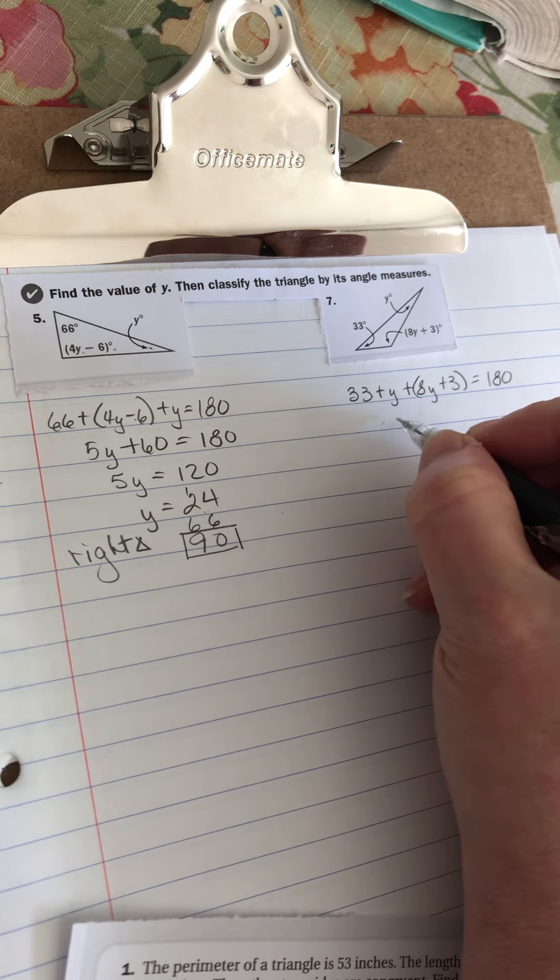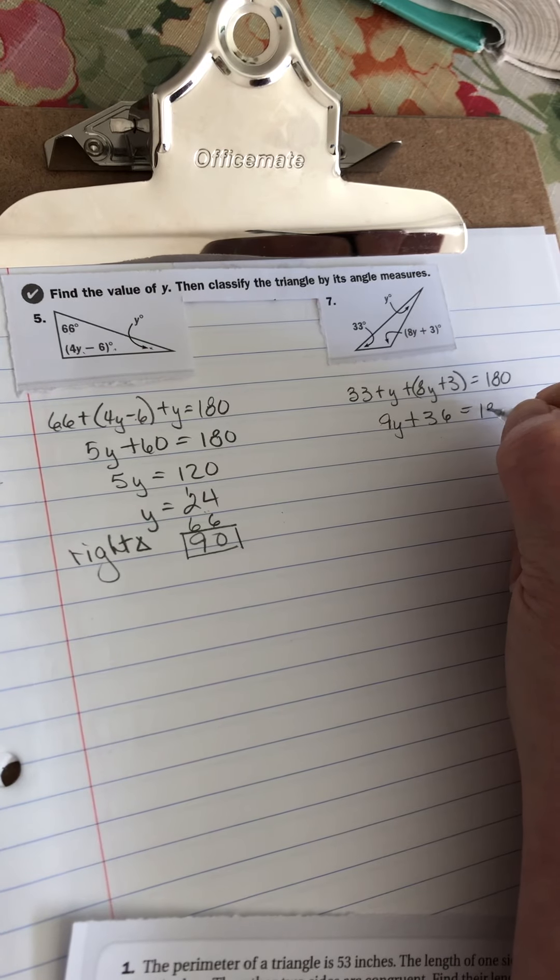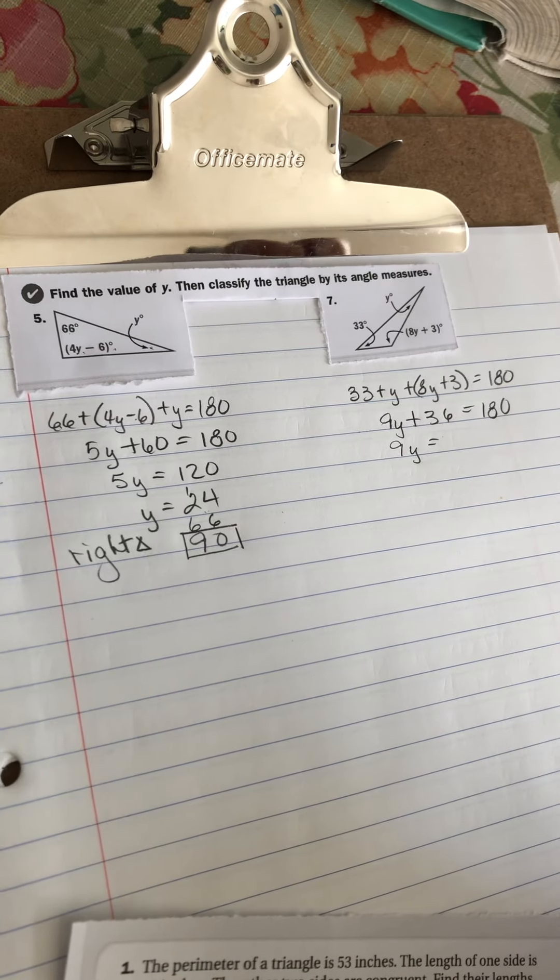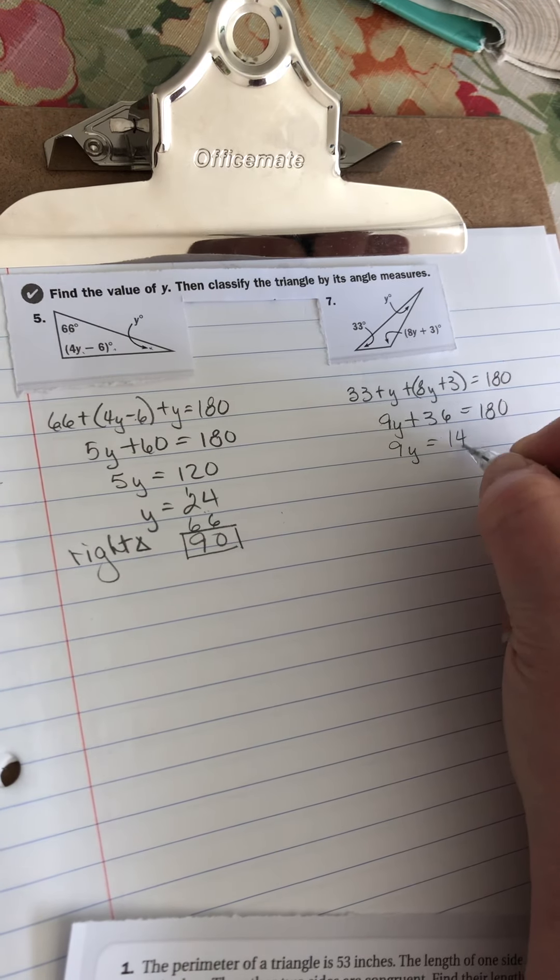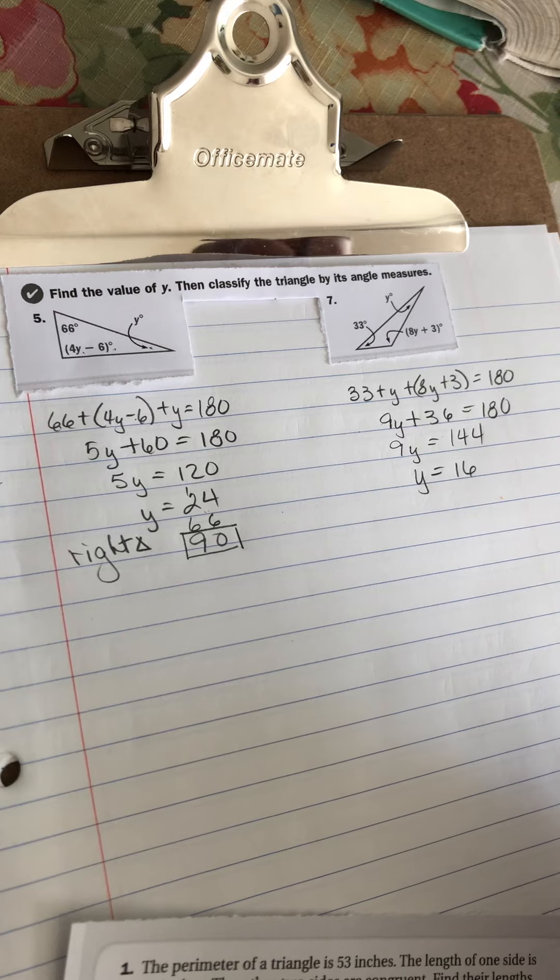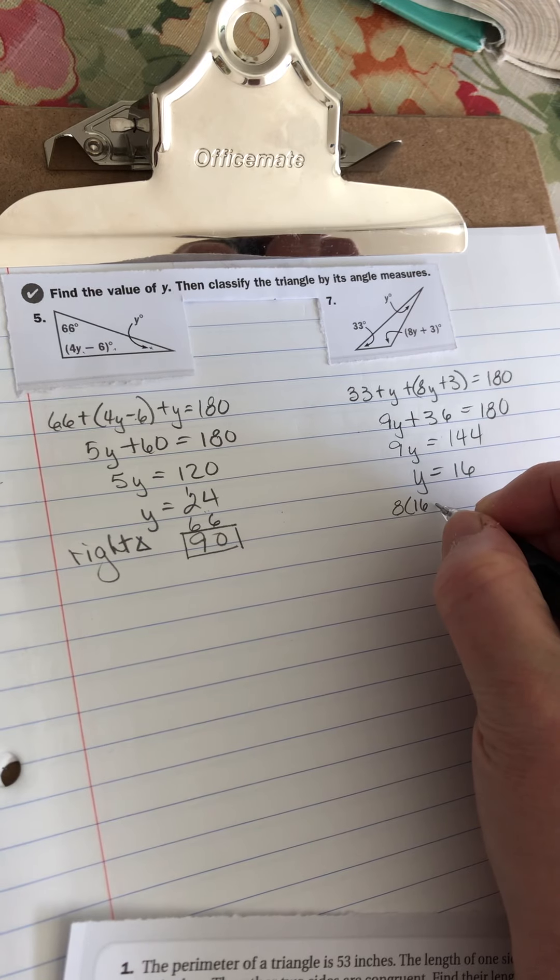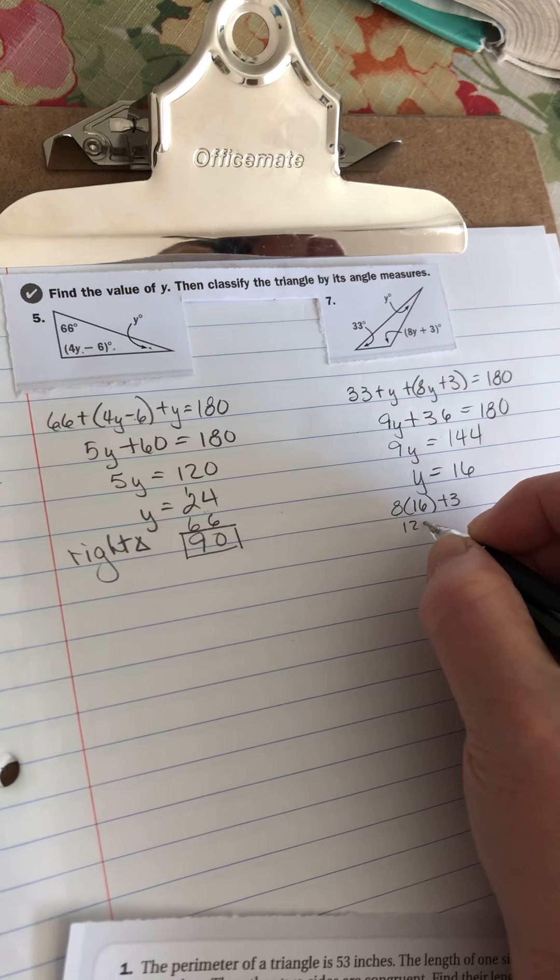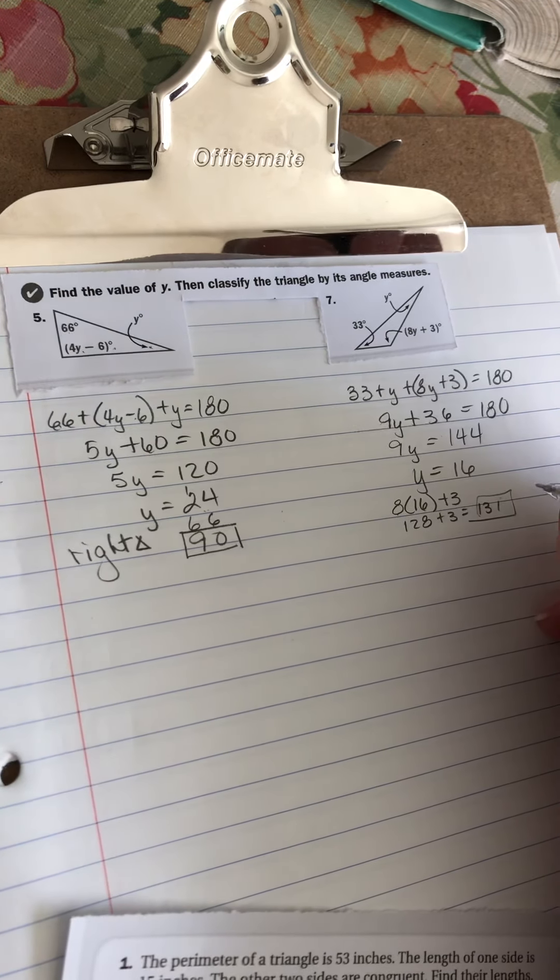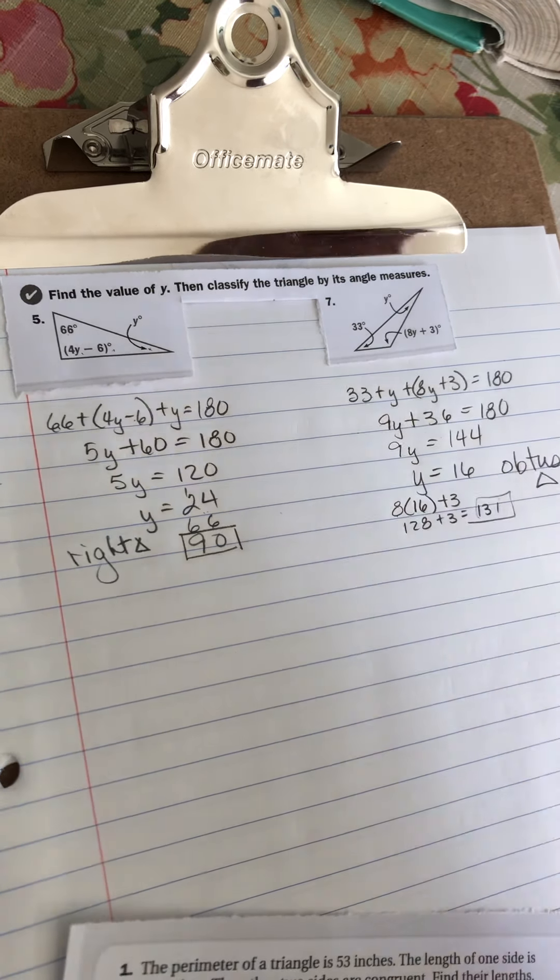So we've got 9y plus 33 plus 3 is 36 equals 180. Subtract 36 from both sides and that's going to give you 144. So y equals 16. I just know that one. So 8 times 16 plus 3 and that's 128 plus 3 is 131. So because that is indeed greater than 90 degrees, it is an obtuse triangle.